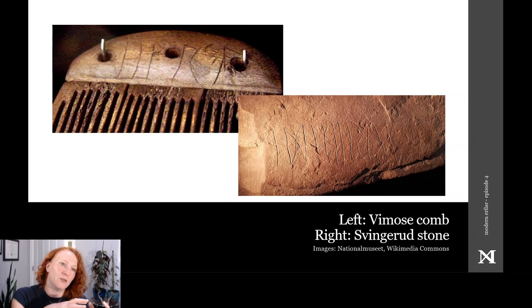The oldest dateable runic find is the Vimus comb found in a bog and dating to 150-180 of the Common Era. The inscription reads Harja, meaning warrior or harrier, kind of like the jet, or perhaps something to do with hair itself, which would make sense given it's a comb. Similarly, the oldest rune stone, as of 2022, comes from Svengerud in Norway, dating from between 1 and 250 of the Common Era. The bone fragments from the same grave have been dated to between 25 and 120 CE, which is a narrower window. The inscription is probably a name, Edibeirig.